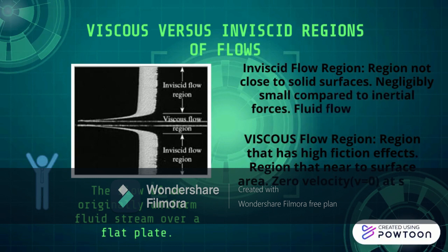Viscous flow region: This region has high or significant friction effects. This region is near to the surface area. In this region, velocity is zero (v = 0) at the solid surface, which is known as the no-slip condition.